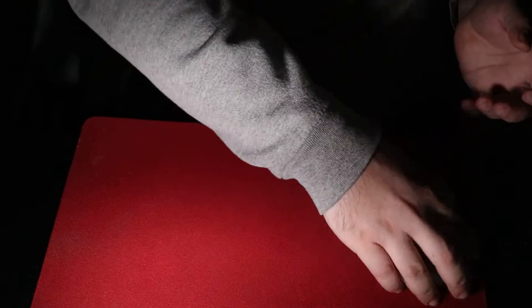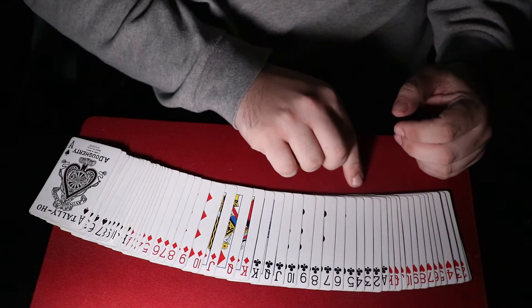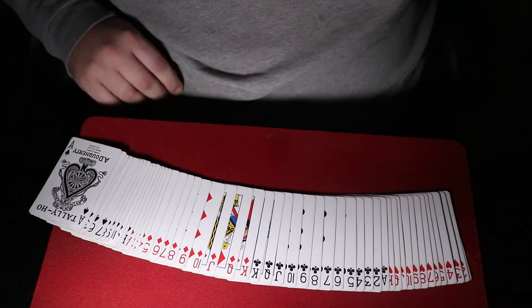Believe it or not, the deck is still in full deck order, running Ace to King of Spades, Ace to King of Diamonds, King to Ace of Clubs, and King to Ace of Hearts. Thank you for watching.